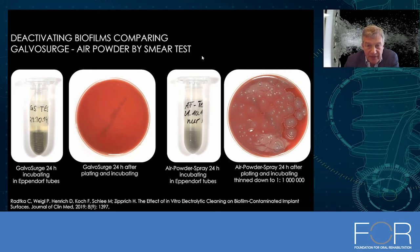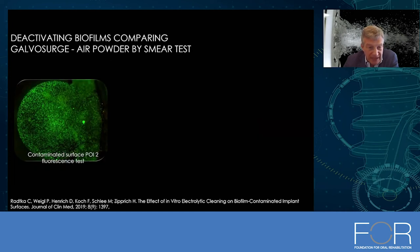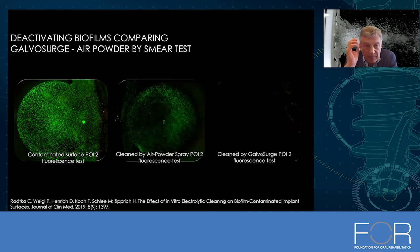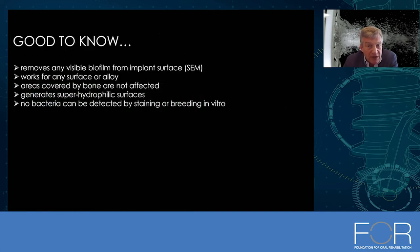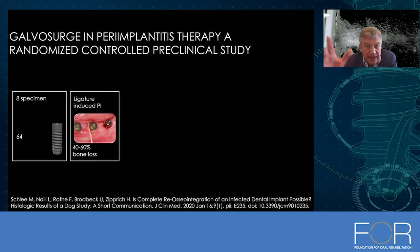We were not able to breed any bacteria from samples cleaned by the electrolytic approach, but were able to breed a large number from the powder spray device. Fluorescence staining is another method to assess bacteria — every green spot represents a living bacterium. After cleaning, the sample cleaned by powder spray still showed residual signal, while the sample cleaned by the electrolytic approach showed no detectable bacteria by SEM, staining, or culture.